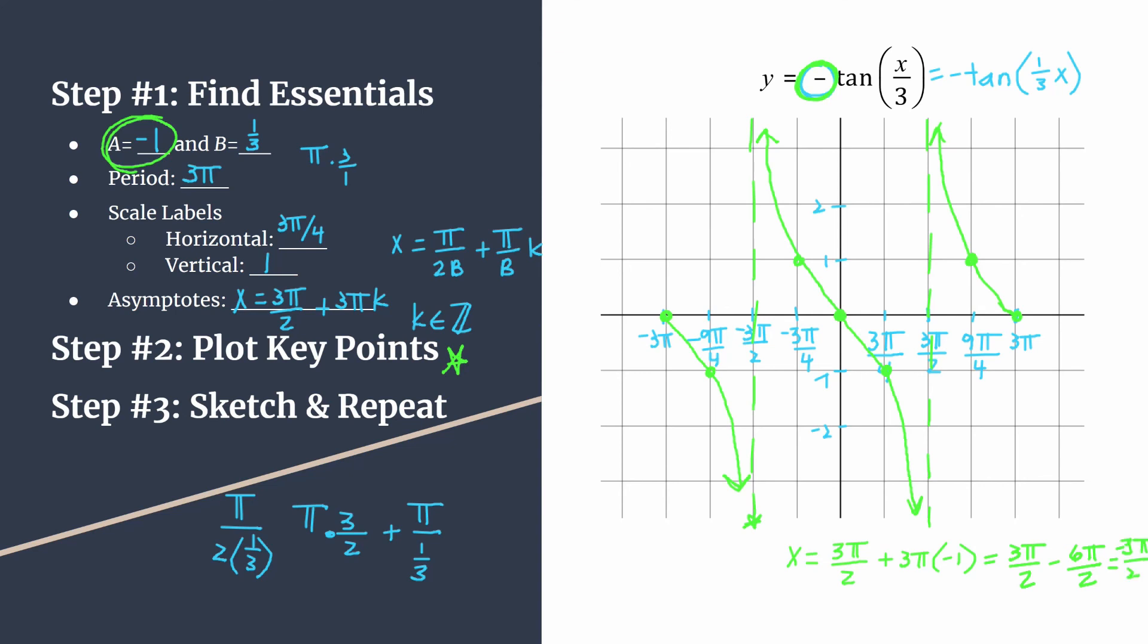So that was three steps to get a great graph of y equals negative tangent of x over three.